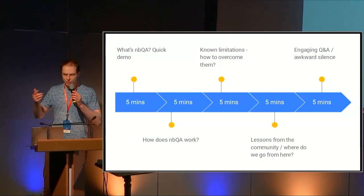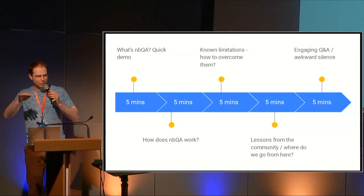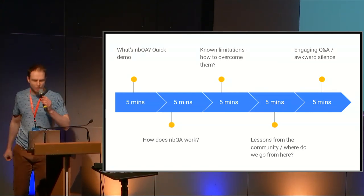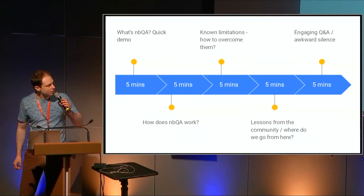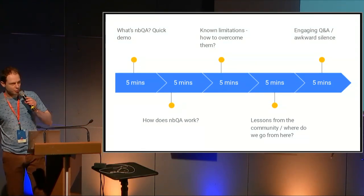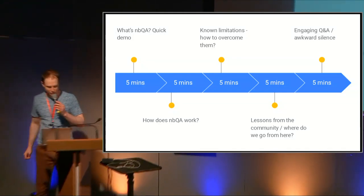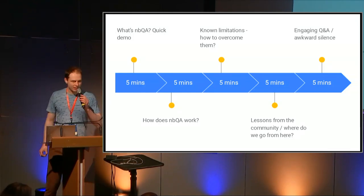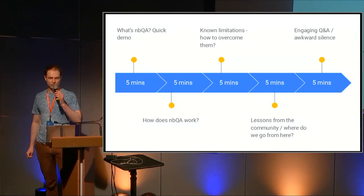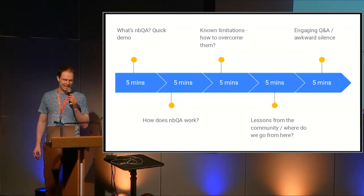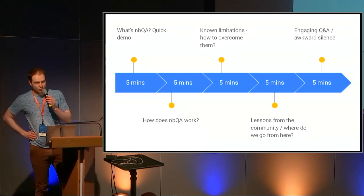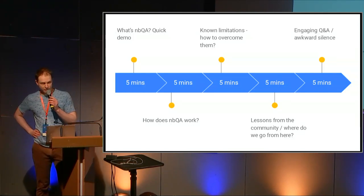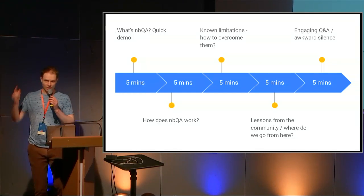We're going to talk about how it works internally. And then, because this is JupyterCon, we also need to talk about how it doesn't work. My hope is that someone will approach me in the corridor telling me how to fix this limitation — if it doesn't happen at JupyterCon, it ain't happening nowhere. And after that, community. Let's talk about the community and where we go from here. And finally, we need to make a decision: do we have an engaging Q&A or an awkward silence?